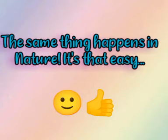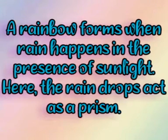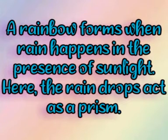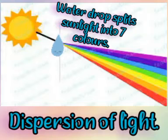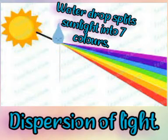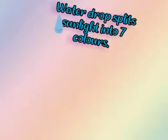This same thing happens in our nature. When rain happens in sunlight, a rainbow occurs. Here, the raindrops act as a color prism which divides the sunlight into seven different colors. And this way, a rainbow forms of seven colors. This is called the dispersion of light.